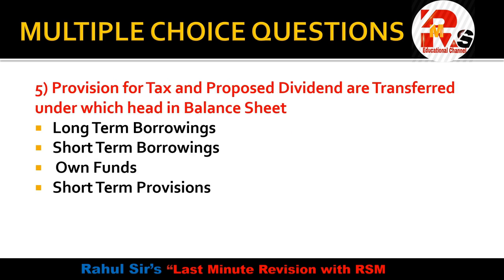Question 5: Provision for tax and proposed dividend are transferred under which head in the balance sheet? Options are: long-term borrowings, short-term borrowings, own funds, or short-term provisions. The right answer is that proposed dividend and provision for tax are transferred under Short Term Provisions.